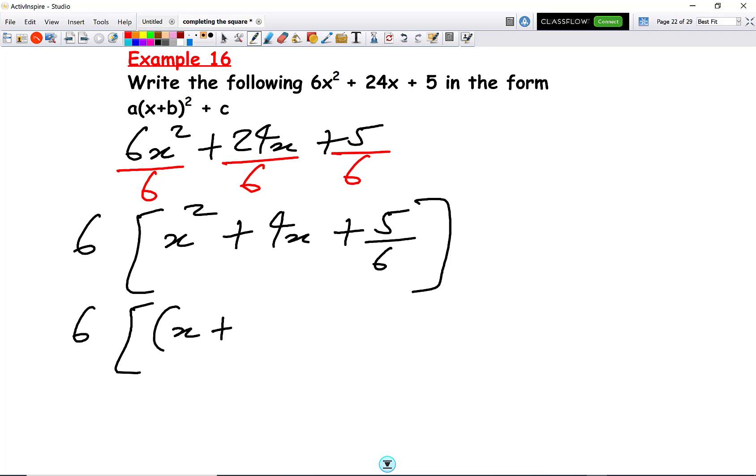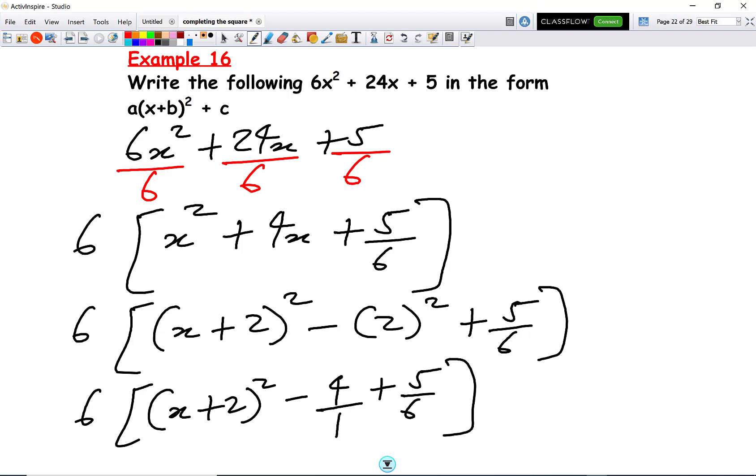So we get (x + 2)² - 2² + 5/6. That will give me (x + 2)² - 4 + 5/6. Don't forget, 4 is over 1, so we can times this 1 by 6 times that 1 by 6.